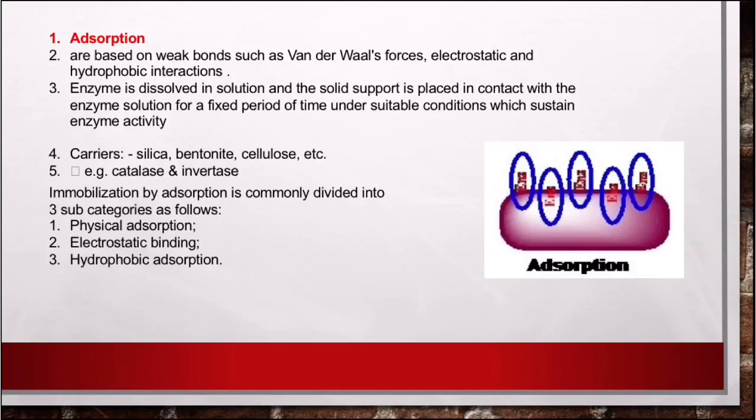Substrate materials used include silica, bentonite, and cellulose. This method also produces immobilized enzymes including catalysts and invertases. Within adsorption, there are three sub-methods: physical adsorption, electrostatic binding, and hydrophobic adsorption.